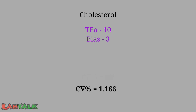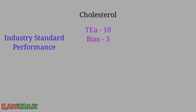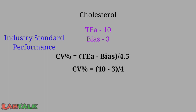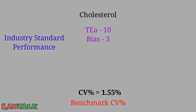So approximately 1.33% becomes the benchmark CV percentage defined by the laboratory to achieve world class performance for cholesterol in internal quality control. For industry standard performance at 4.5 sigma, replacing 6 with 4.5: CV% = (10 − 3) / 4.5 = 7 / 4.5 = 1.55%. This is the target CV percentage for cholesterol required to achieve 4.5 sigma industry standard performance.